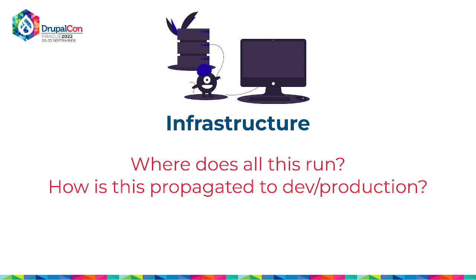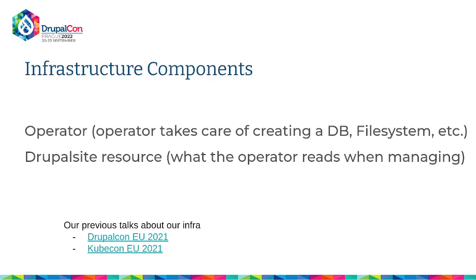My colleague showed how we build images and add new modules. The question now is how we deploy all this. We run OpenShift, which is basically Kubernetes with extra features like security and multi-tenancy. On our Kubernetes cluster we have two major components: an operator — a Kubernetes operator that works with the Kubernetes API — and a second thing called the Drupal site resource. This is a custom resource that works with the Kubernetes API and allows our operator to understand what we're requesting and create all the necessary infrastructure to make our Drupal website run.